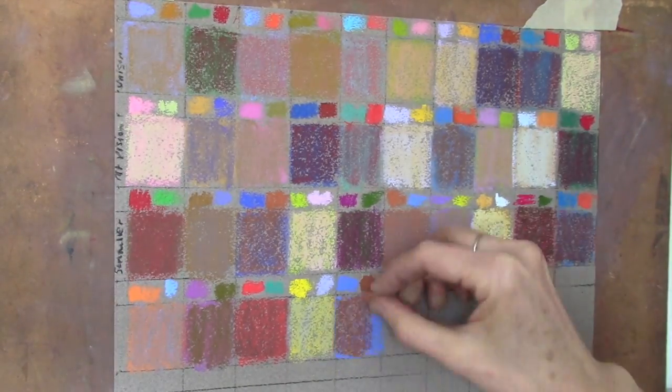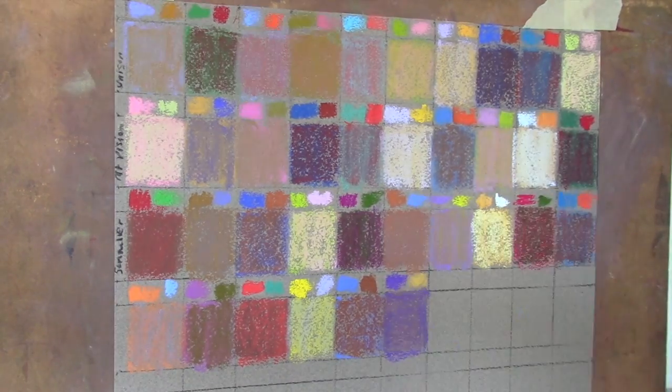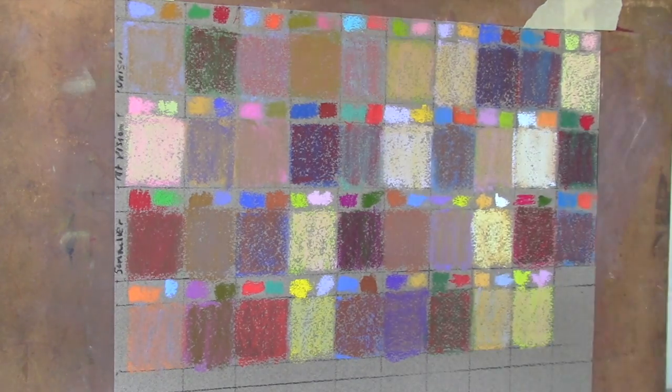Now many of them might not be the purest of greys, but they are muted. If you work over them with another color, you can grey those colors down even more. This just gives you an idea of what you can do with different colors to grey them down. You can really see the intensity of the original color compared to the muted color that is created.